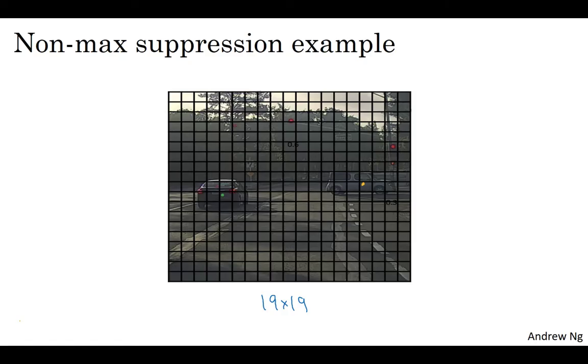In practice, you're running an object classification and localization algorithm for every one of these grid cells, so it's quite possible that this grid cell might think that the center of the car is in it, and so might this, and so might this. And for the car on the left as well, maybe not only this box, if this is a test image you've seen before, not only that box might decide that it's found a car, maybe this box and this box and maybe others as well will also think that they've found a car. So let's step through an example of how non-max suppression will work.